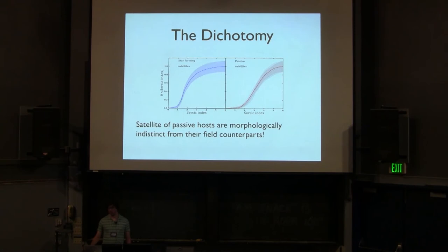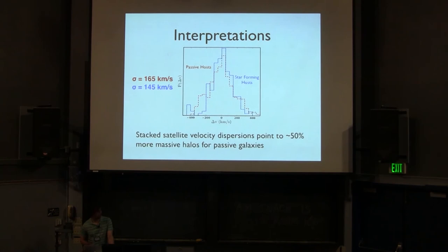So some of the earlier talks have motivated this connection between star formation rate and morphology. So here is distributions of Sersic indices of satellites of passive hosts split according to the satellite star formation characteristic, either star-forming or passive. And what we see is that if we take Sersic index to be a good indicator of the satellite's morphology, there's no distinction between the morphologies of the satellites in the field, despite the fact that the satellites, at least some percentage of the satellites, seemed to have been environmentally quenched, whereas presumably none of the field objects were.